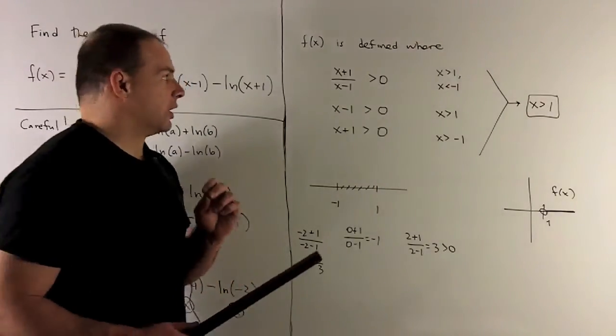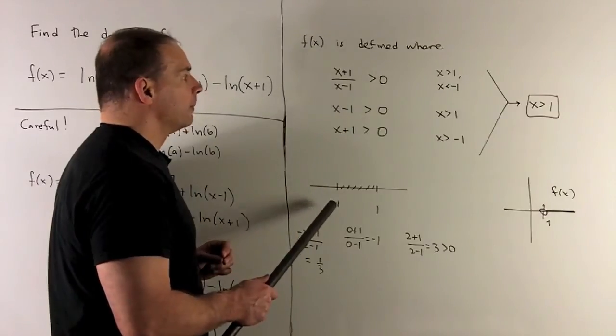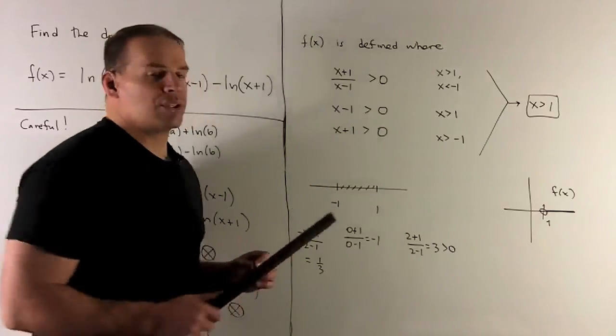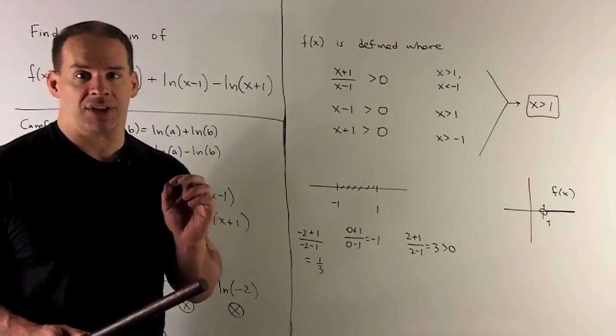Now where are the zeros? That's where the numerator is zero. So we have a zero at minus 1. For the vertical asymptotes, that's where the denominator is equal to zero. So we have a vertical asymptote at x equals 1.